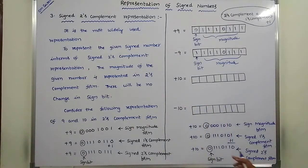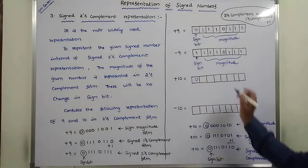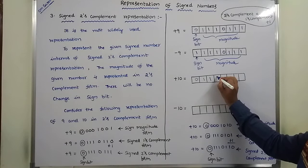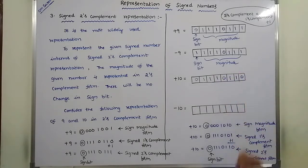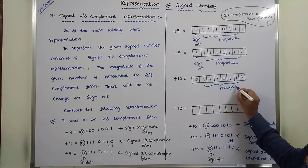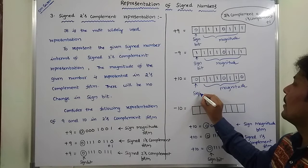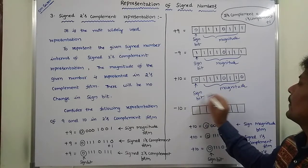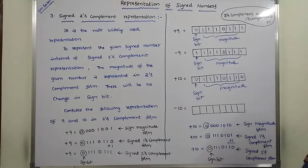So plus 10 can be represented with sign bit 0, and the remaining magnitude bits forming the signed two's complement result. For minus 10 in signed two's complement representation, the magnitude remains the same but the sign bit changes from 0 to 1, because a negative sign requires digit 1 at the MSB position as the sign bit.